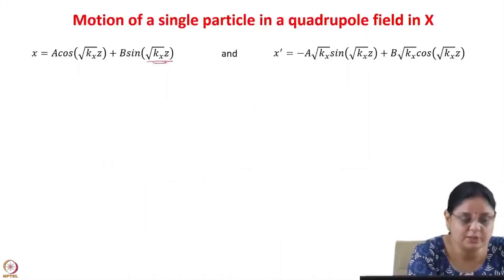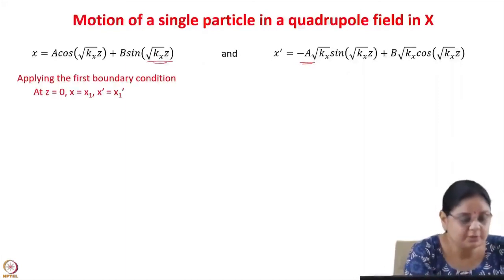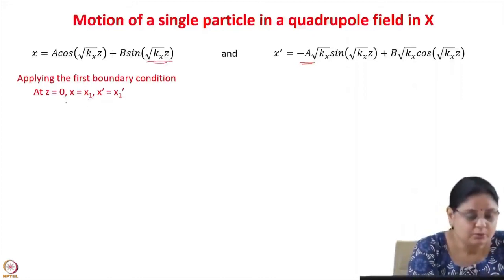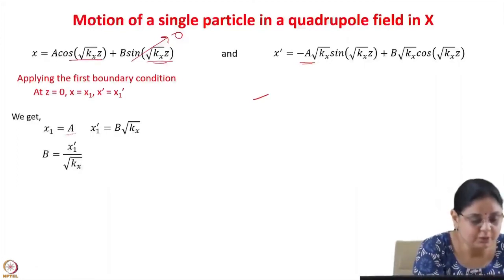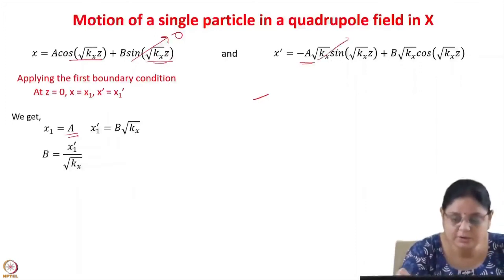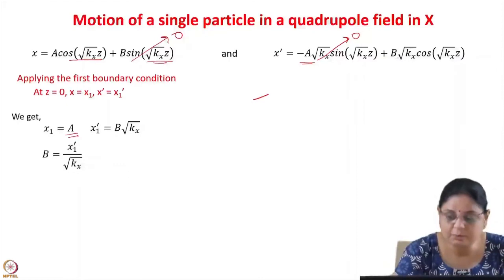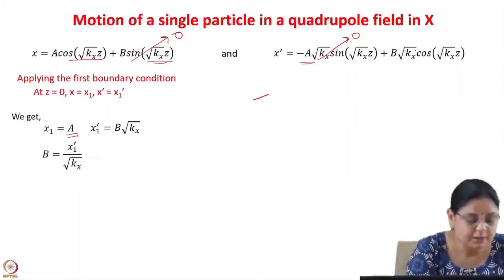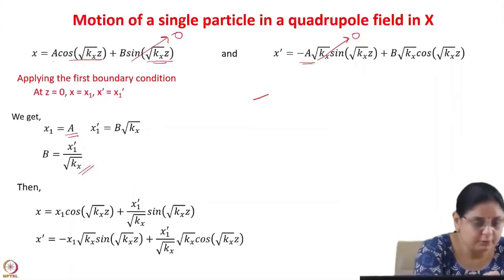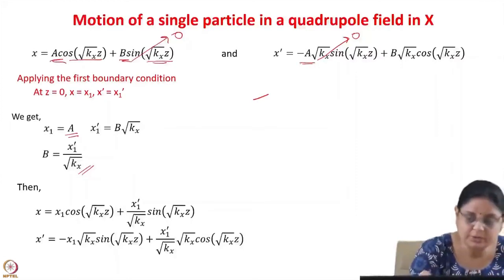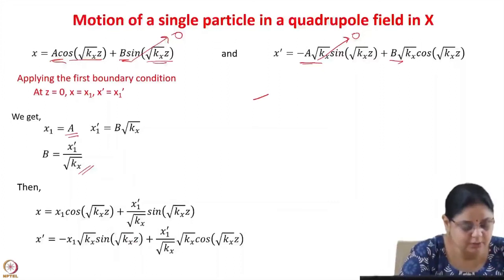Applying the first boundary condition at z = 0: x = x1 and x' = x1'. Substituting into the solution, the sine term goes to 0, giving x1 = A, and the cosine term gives x1' = B·√kx. From here we find A = x1 and B = x1'/√kx. Substituting these values of A and B back into the equations gives us the expressions for x and x'.